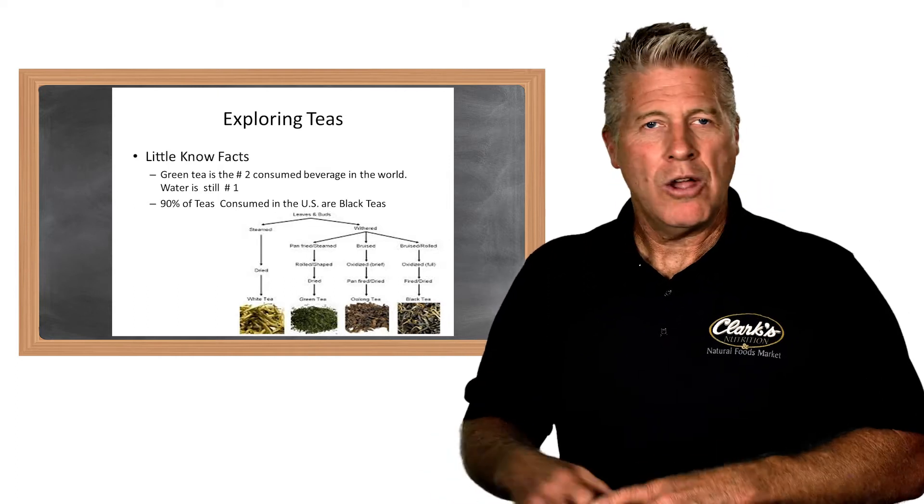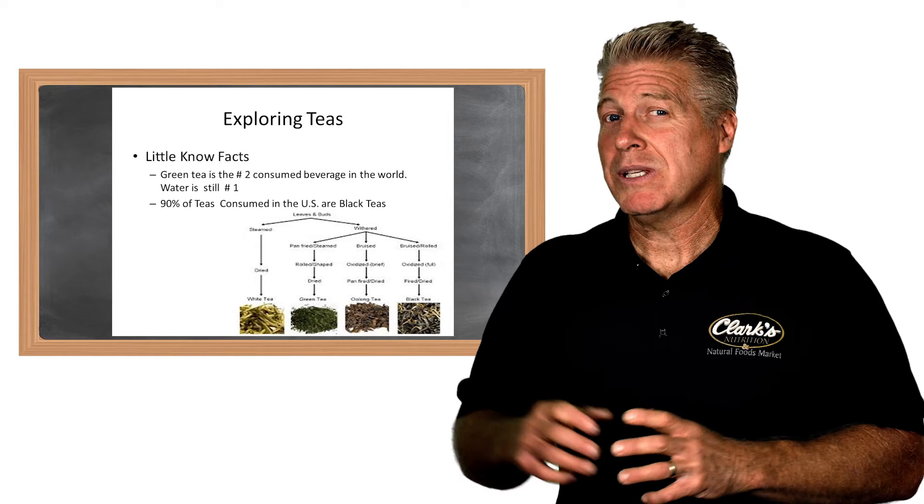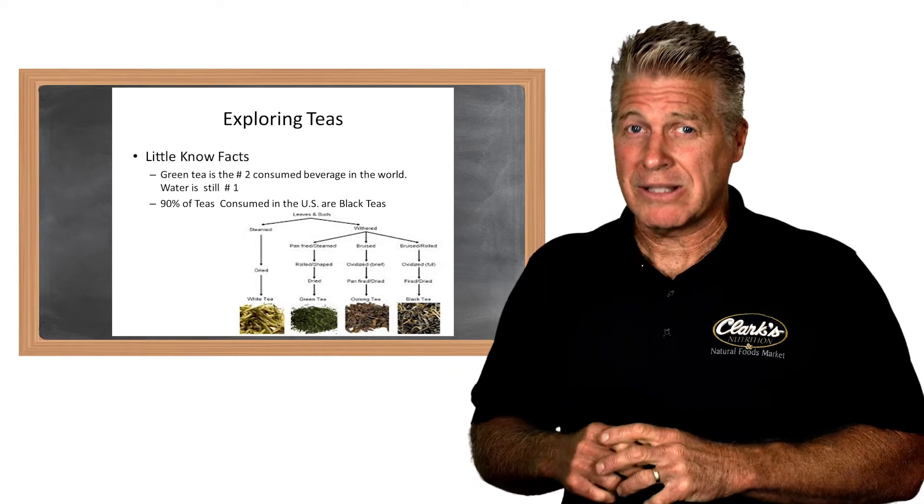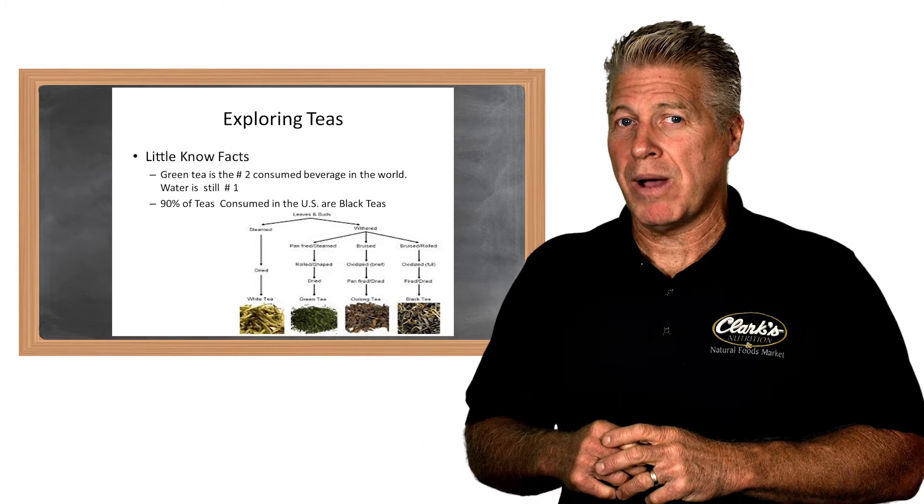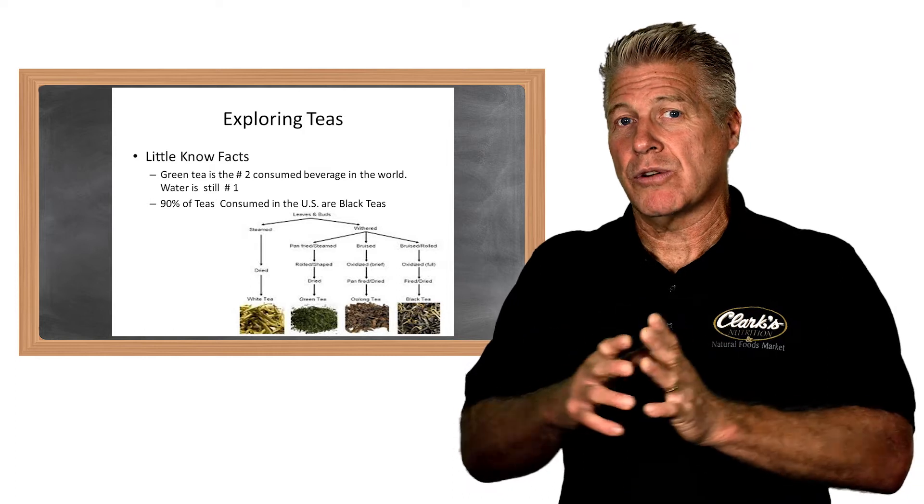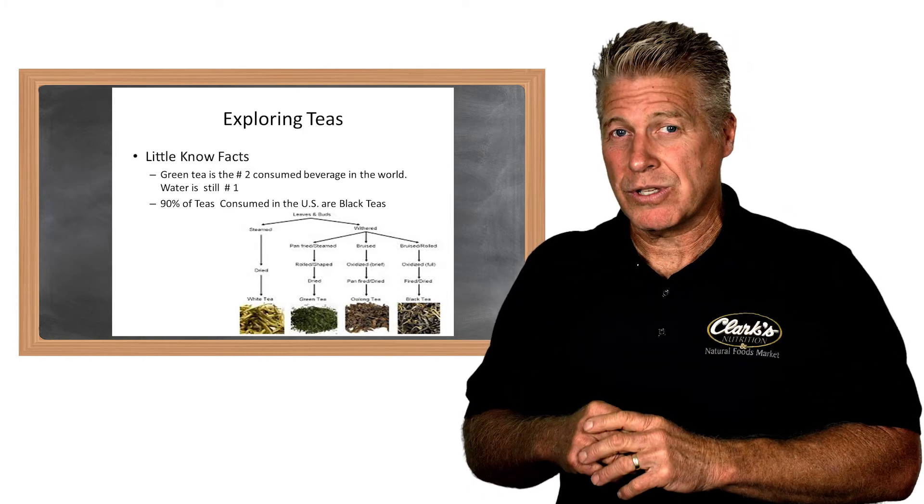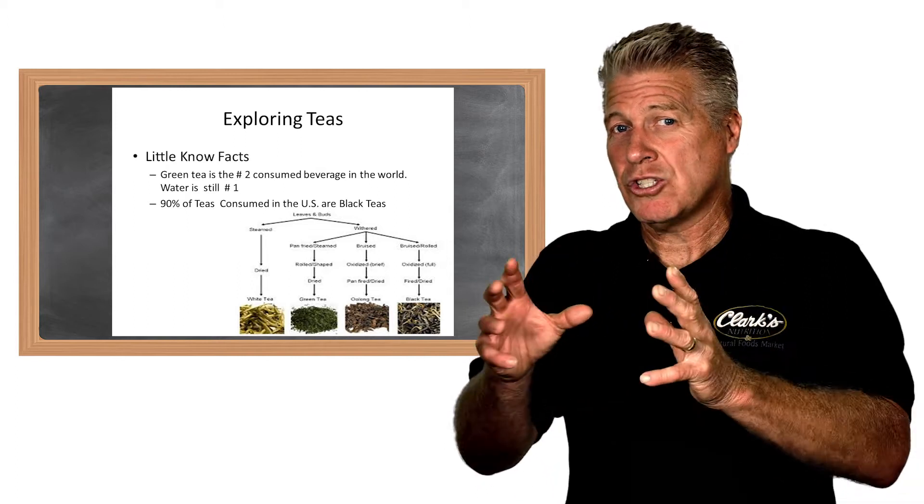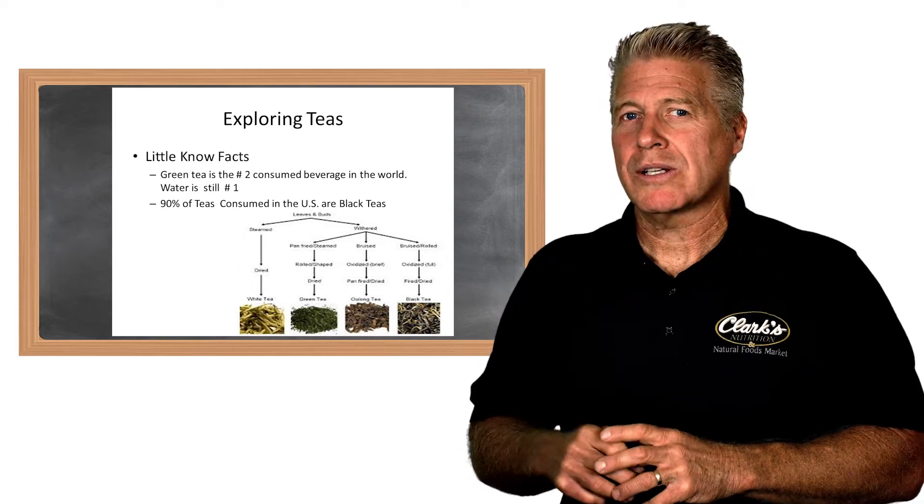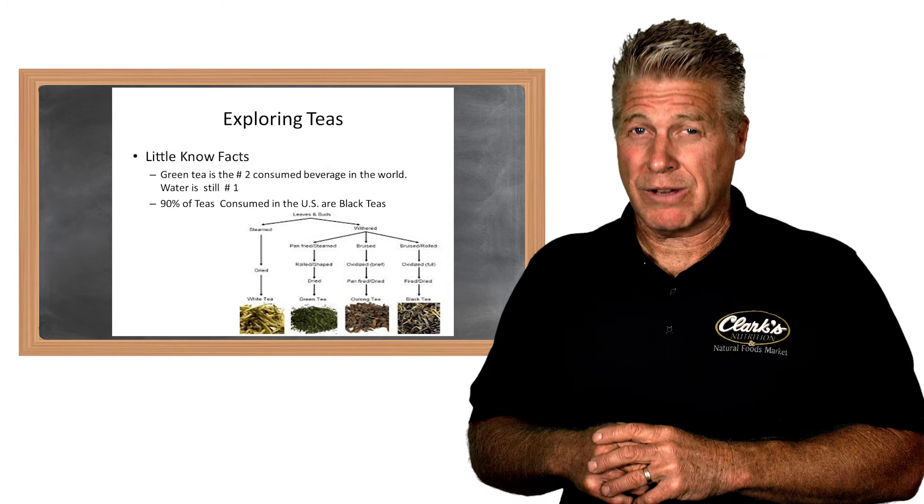Next on the list is oolong tea. Once again, from the same plant, this particular picking of these leaves usually happens in the summer months. As you know, the oxidation or the changes of the leaf color being more prevalent towards the summer and the fall months, we see the changes occur. When it comes to oolong tea, one of the things that they do is they actually partially ferment it.